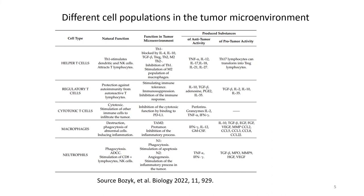Here is a detailed list of the different cell populations in the tumor microenvironment, listing their natural function and then their altered or new function in the TME. For helper T cells, the natural function is TH1 stimulates dendritic and NK cells and attracts T lymphocytes. In the tumor microenvironment, TH1 is blocked by interleukin 4, 10, TGF-beta, TH2, and M2; with TH2 inhibition of TH1 and stimulation of M2 macrophages. The produced anti-tumor substances include TNF-alpha, interleukin 12, 17, 18, 21, 27 and so on.